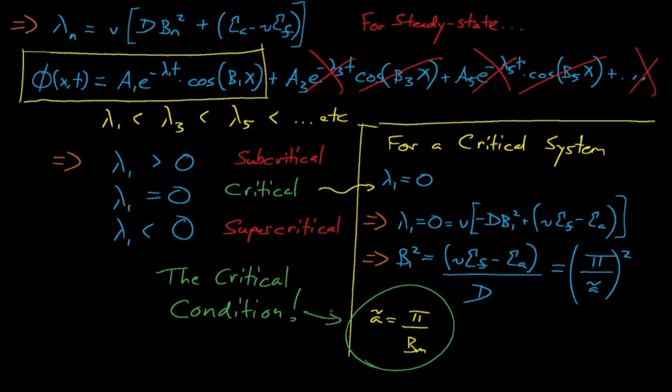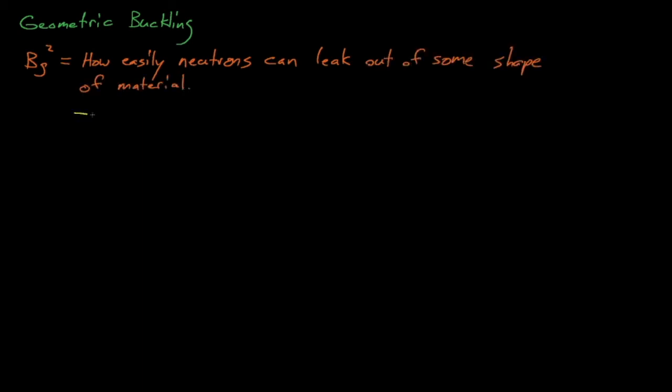Likewise, systems with lower diffusion coefficients will prevent neutrons from leaking out of the system, which also lowers the required critical mass. This b1 term is actually known as b sub g, the geometric buckling. The geometric buckling of a shape describes how easily neutrons will leak out of that shape. Certain shapes, such as spheres and cubes have more mass concentrated into a smaller volume, which reduces the chance that neutrons will leak and thus lowers the shape's geometric buckling.